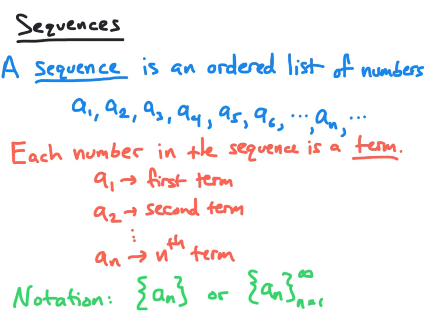To do this, we either put the formula for the nth term a sub n inside two curly braces as in the first part of the notation here. Or if we want to be more specific, on the right hand side, we can put an n equal to one at the bottom and an infinity at the top. And that indicates that our formula for a sub n is going to be evaluated starting at n equal to one and increase forever.